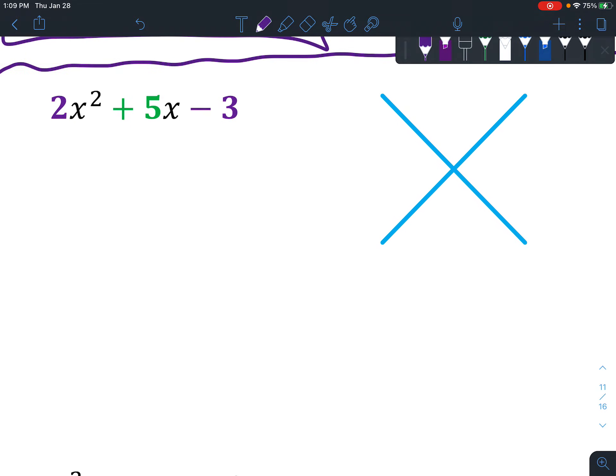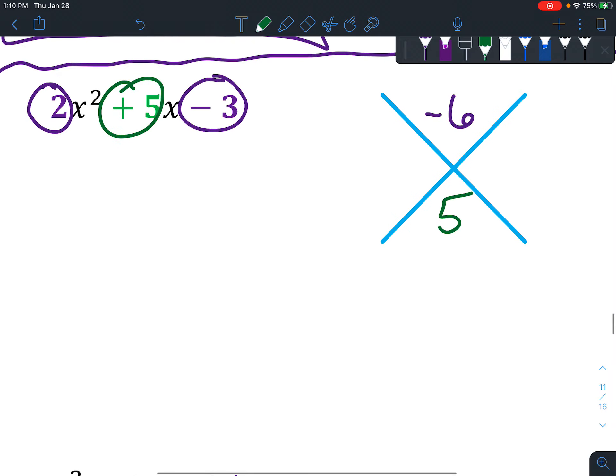Okay, so let's set it up the same way though. You're going to take your first times your last and put it on top. So 2 times negative 3 is negative 6. You're going to take your middle term and put it right down here in the bottom. Now you're going to think about your factors: 1 times 6 or 2 times 3.